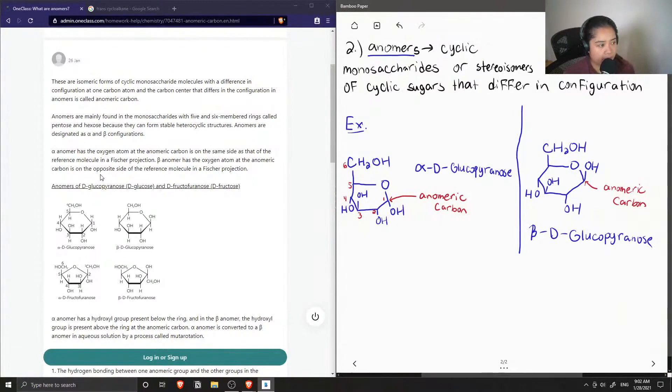Alpha anomer has the oxygen atom at the anomeric carbon on the same side as that of the reference molecule in a Fischer projection. The beta anomer has the oxygen atom at the anomeric carbon on the opposite side of the reference molecule in a Fischer projection.